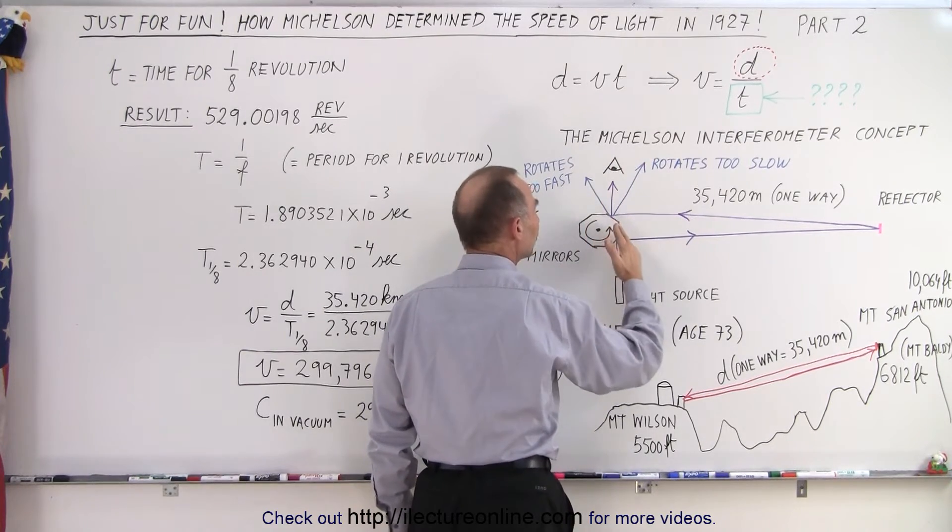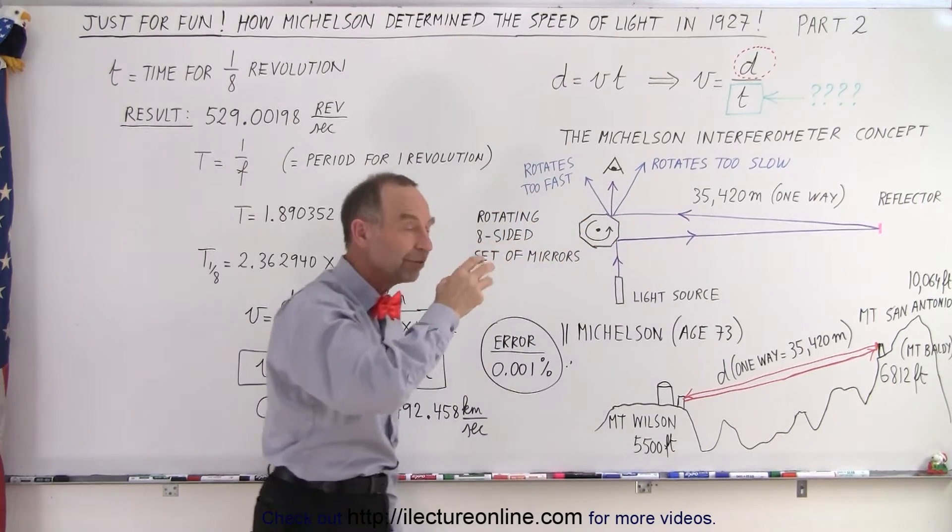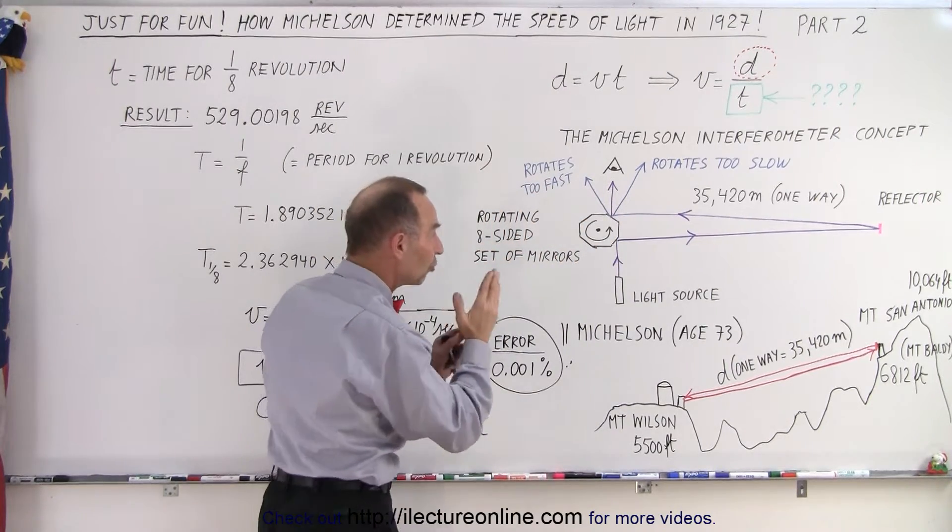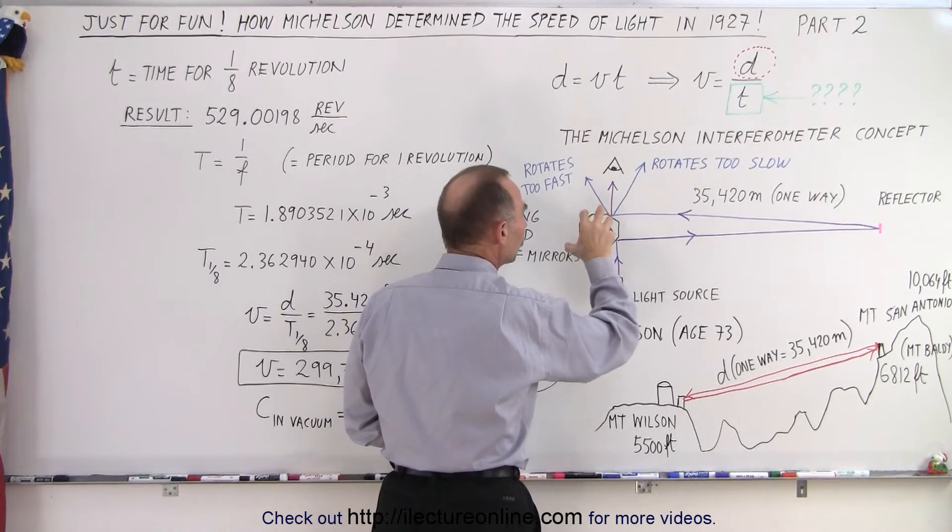Too slow, the light would go like this. If it moved too fast, the light would go like this. So you keep changing the speed of that wheel until you get it just right that the person would see the light coming from there at just the right speed.